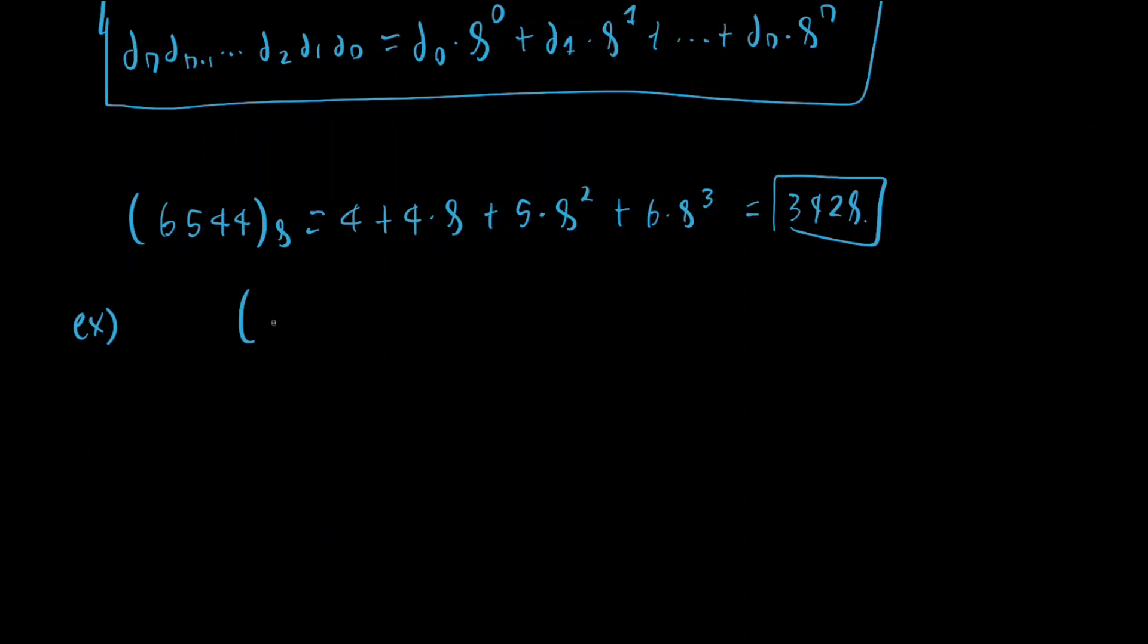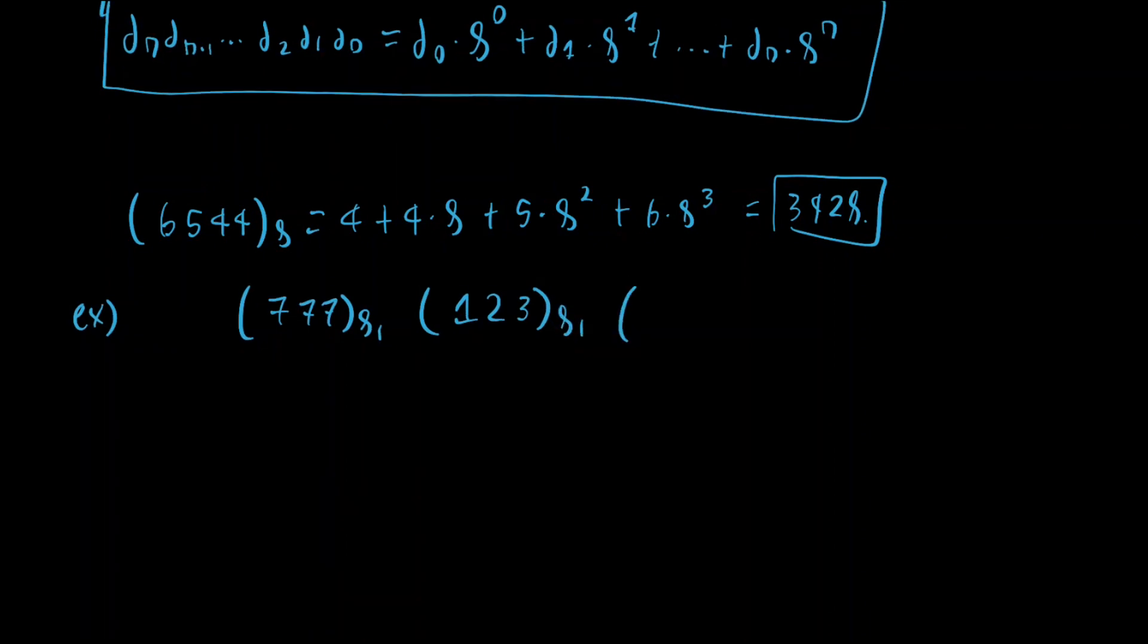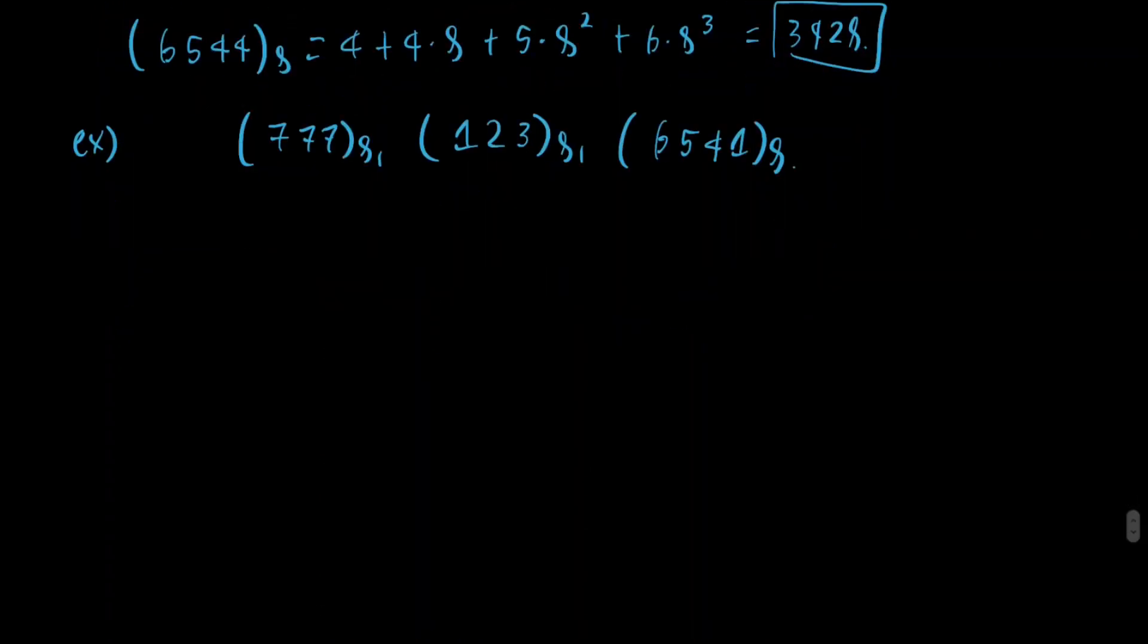As an exercise, you can try and convert the following numbers from octal to decimal. So in particular, 7, 7, 7. Then 1, 2, 3. And for example, 6, 5, 4, 1. And again, now let's try to do the same thing as before. Let's now try to convert from decimal to octal.